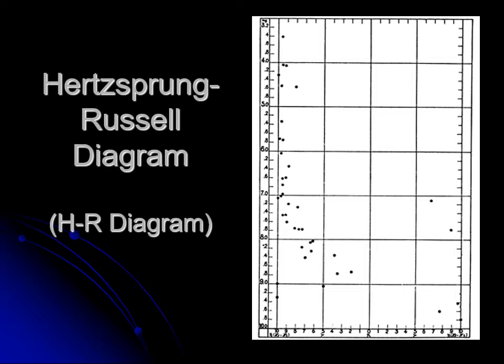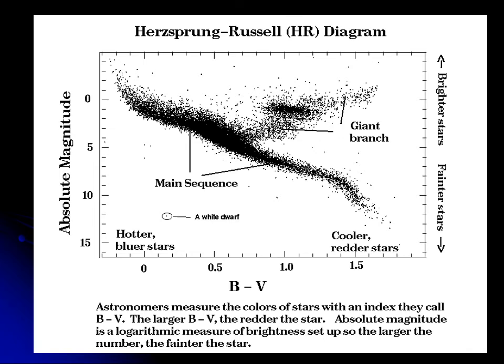Their first indication had color index on the horizontal axis: negative color index to the left, positive to the right. Magnitudes get bigger going down, and since bigger numbers mean dimmer, that means it's bright at the top, dim at the bottom, cool on the right, and hot on the left. They noticed a few big cool stars, but most stars followed a general trend. With more data, using absolute magnitude on the vertical axis and color index on the horizontal, luminosity increases upward and temperature increases to the left.